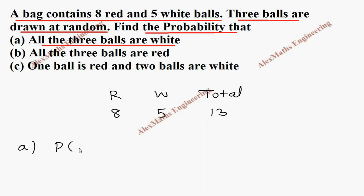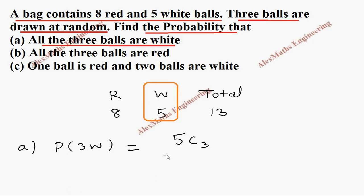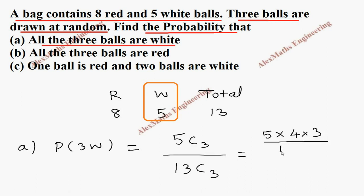For part A, they are asking: all 3 balls are white. So P of 3 white — all 3 will come from the 5 white balls, then only all 3 can be white. So from the 5 we take 3 white, and the total possibilities come from the total — out of 13 we take 3.